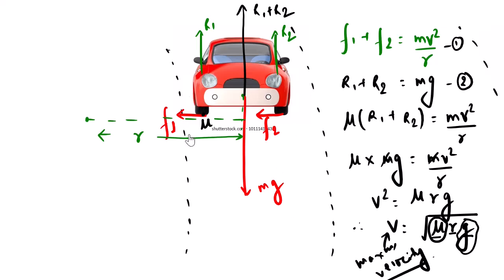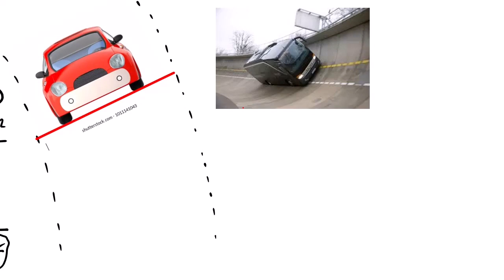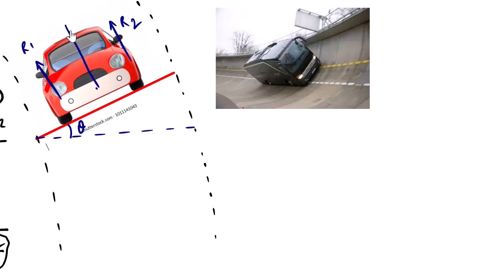Now, I don't want to depend on friction alone, because there is a chance of skidding. So what do I do? I will make the road banked — I will give the road a banking angle theta from the horizontal. The effective normal force R1 plus R2 acts perpendicular to the banked surface, with weight Mg downward and frictional forces F1 and F2 also present.